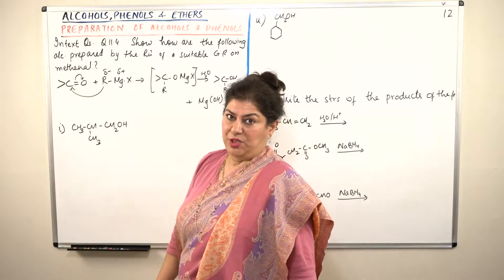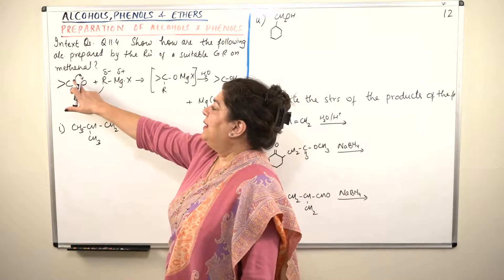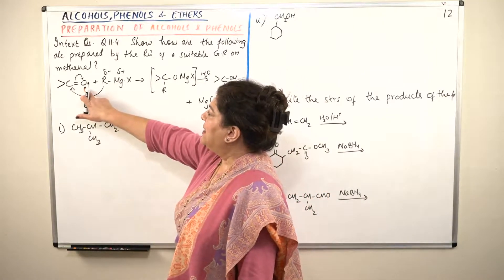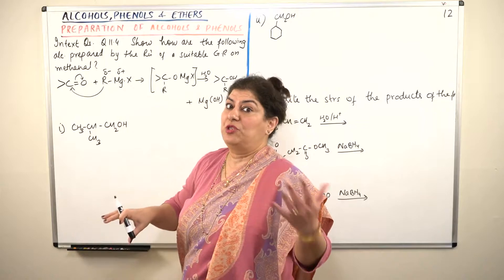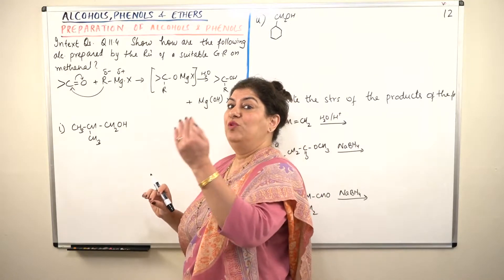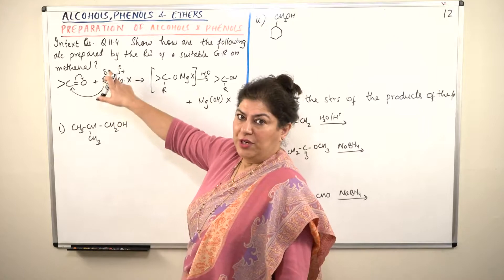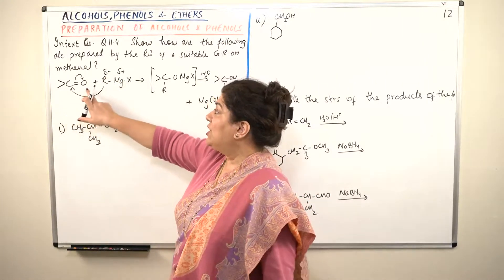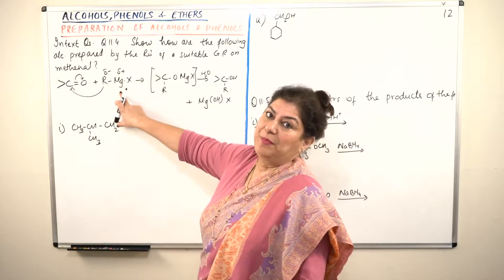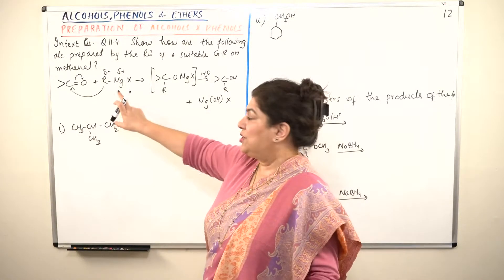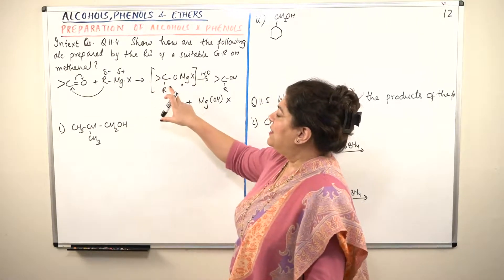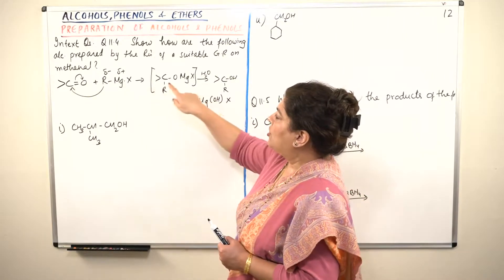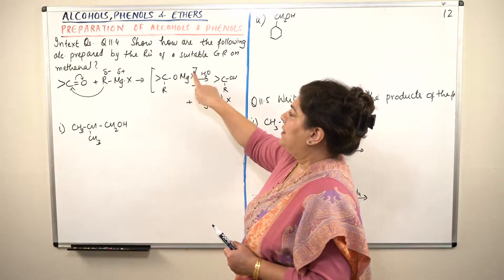So what happens? The pi bond breaks between the carbon and oxygen and the electrons go to oxygen. So oxygen becomes negatively charged. When oxygen becomes negatively charged, the carbon becomes positively charged because the two electrons have moved towards oxygen. Alkyl which is partially negatively charged will get connected to carbon which is now positively charged and oxygen which is negatively charged will attract the magnesium which is positively charged.